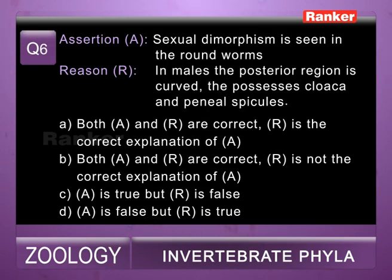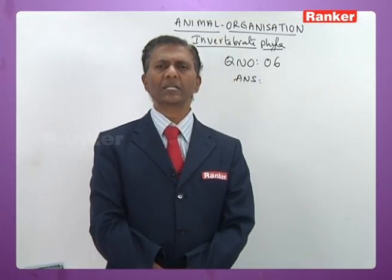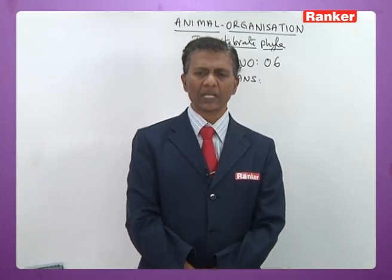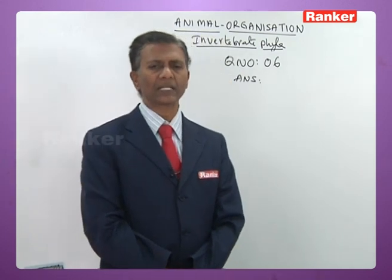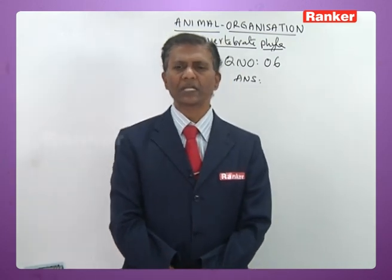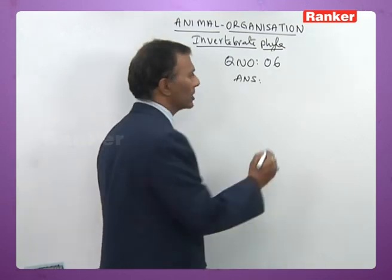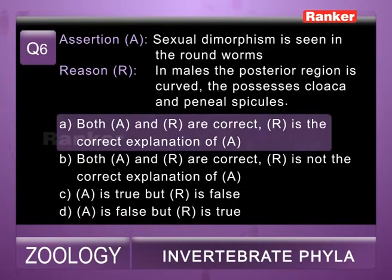Sixth question — assertion: sexual dimorphism is seen in roundworms. Reason: in males the posterior region is curved, possesses cloaca and penial spicules. Both assertion and reason are true and reason is the correct explanation. So sixth question correct answer is a.